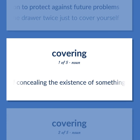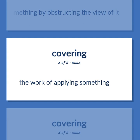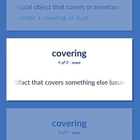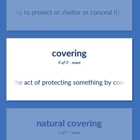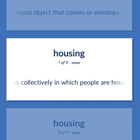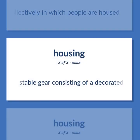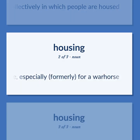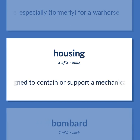The act of concealing the existence of something by obstructing the view of it. The work of applying something. A natural object that covers or envelops. Under a covering of dust. An artifact that covers something else, usually to protect or shelter or conceal it. The act of protecting something by covering it. A natural object that covers or envelops. Structures collectively in which people are housed. Stable gear consisting of a decorated covering for a horse, especially formerly for a warhorse. A protective cover designed to contain or support a mechanical component.